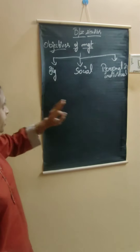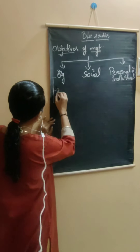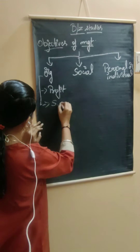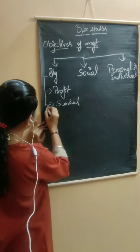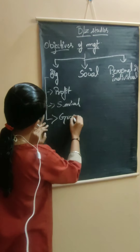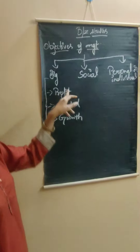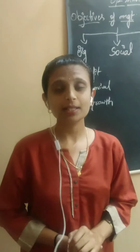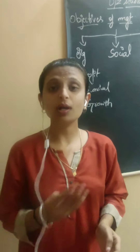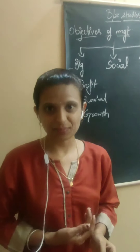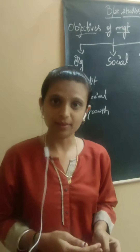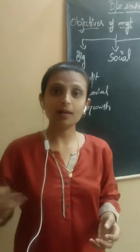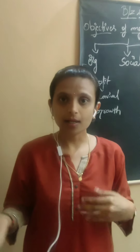Organizational objectives have three sub-categories: one is profit, second one is survival, and third one is growth. First one is profit — earning profit is very essential for any business organization to cover all its costs, all its expenses, and also for long continuity of the business. The management should ensure that the business is earning sufficient profit in order to cover the cost and also whatever risks are arising in the business.